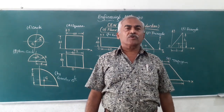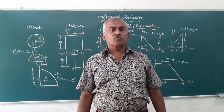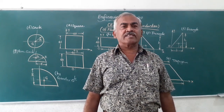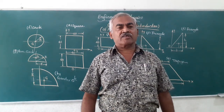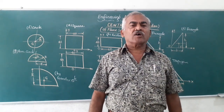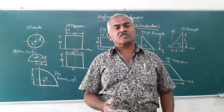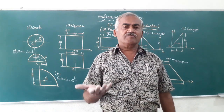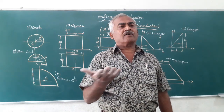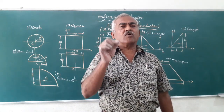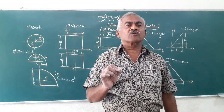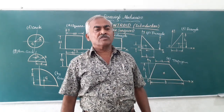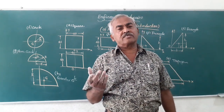Every engineer should know what the centroid is, what center of gravity is, and the difference between these two, because generally in examinations they ask you to distinguish between centroid and center of gravity. The centroid is the center of mass of a plane surface — it could be a rectangular, circular, semicircular, trapezoidal, or triangular surface. The point where the full mass is concentrated for that particular surface is called the centroid.